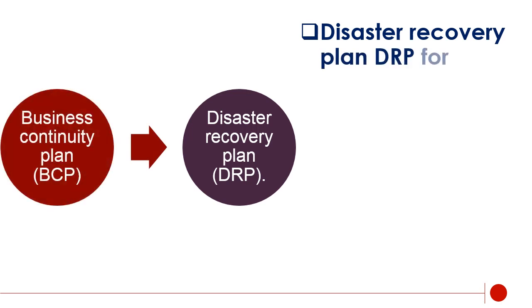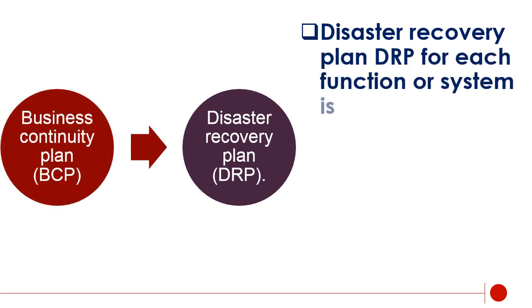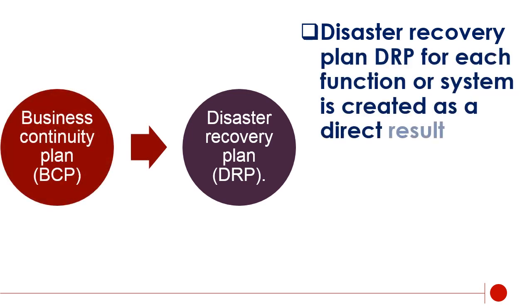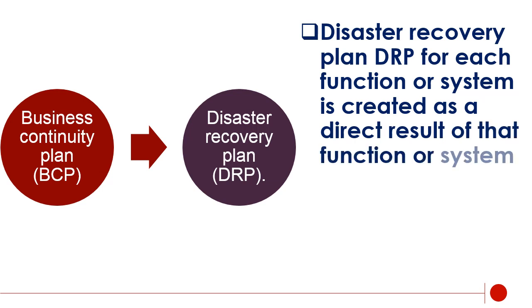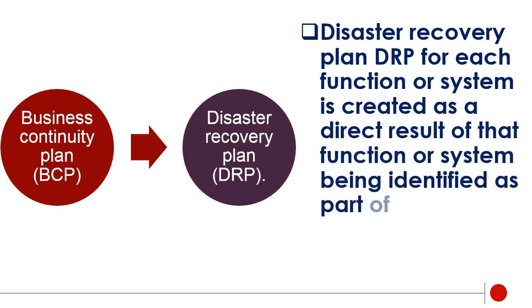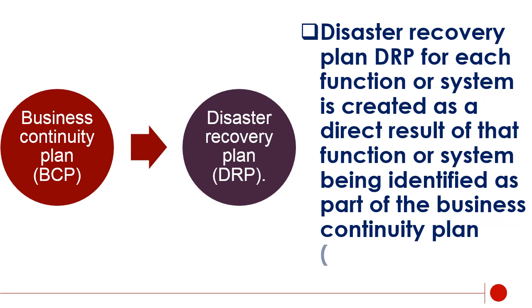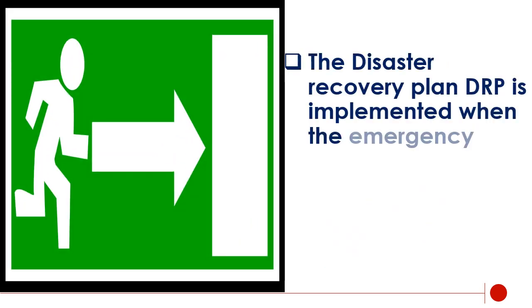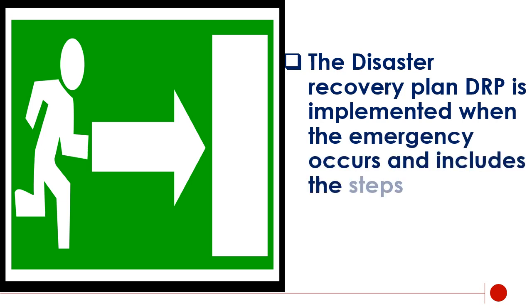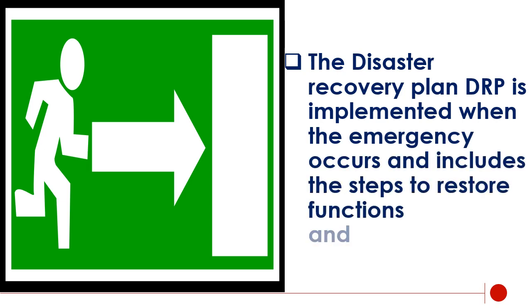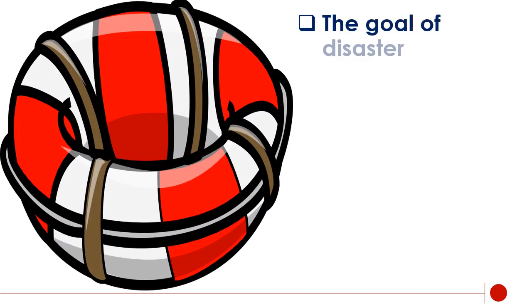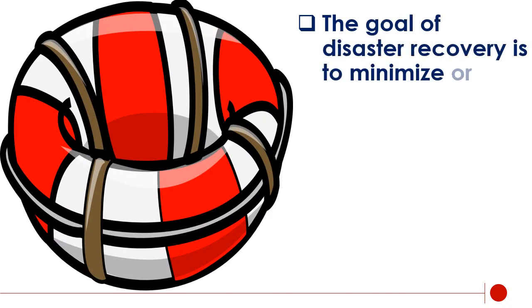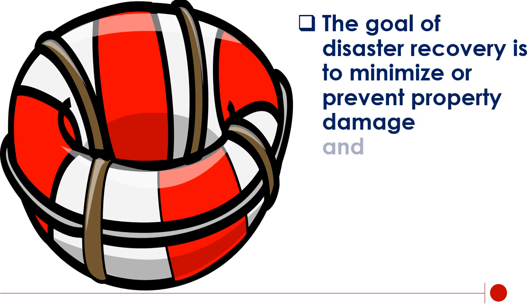The disaster recovery plan, DRP, for each function or system is created as a direct result of that function or system being identified as part of the business continuity plan, BCP. The disaster recovery plan, DRP, is implemented when the emergency occurs and includes the steps to restore functions and systems. The goal of disaster recovery is to minimize or prevent property damage and prevent loss of life.